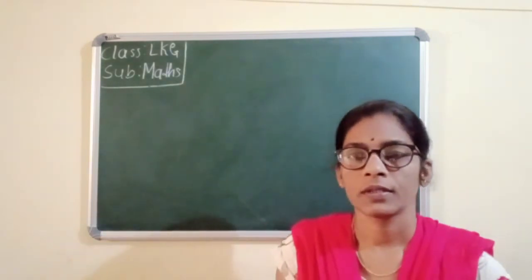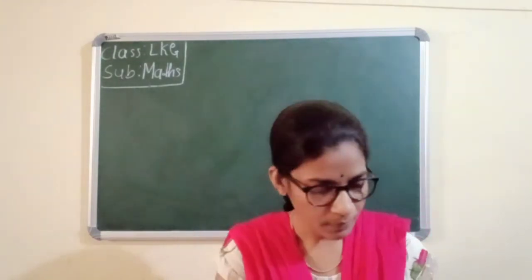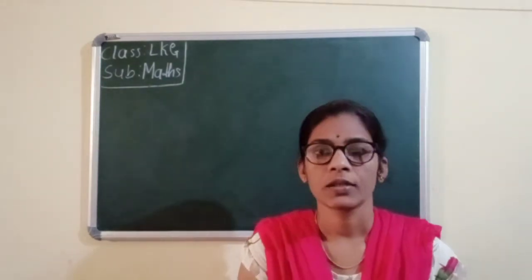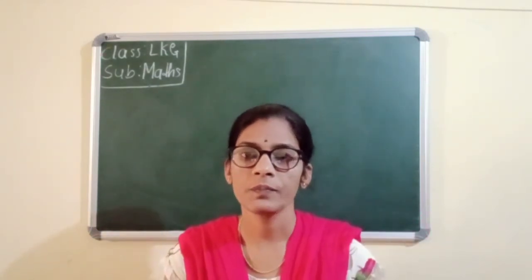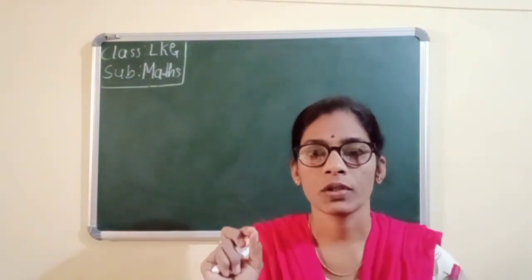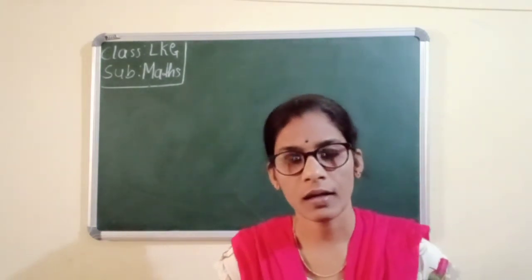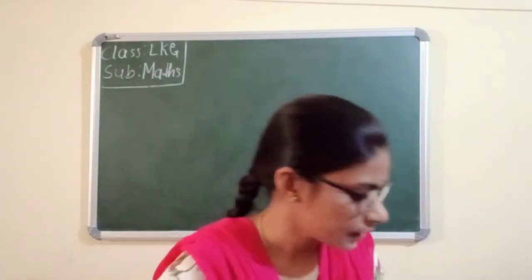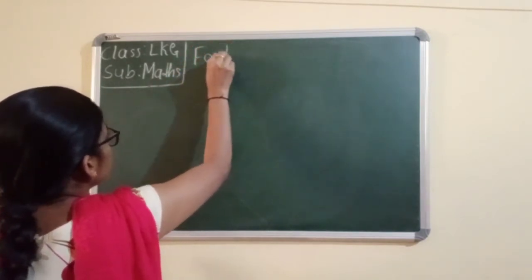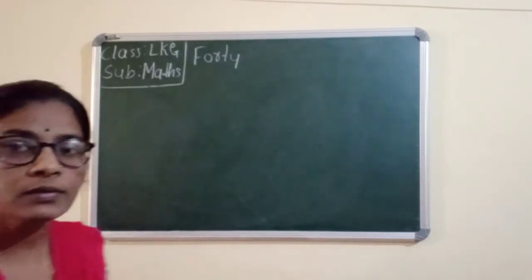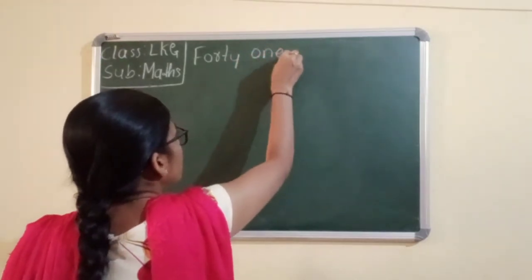Today I am going to tell you 41. Tell me 40 spelling. F-O-R-T-Y, forty. I will write here 41 to 45 spellings. Already you know the 1 to 9 spellings, and you know also 40 spelling. And I will write here 40, F-O-R-T-Y, forty. And tell me 1 spelling, O-N-E, one. 41.